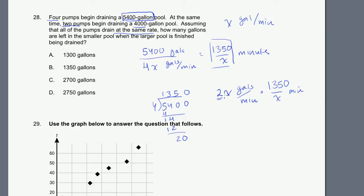The x's cancel out. You have an x in the numerator, an x in the denominator. The minutes cancel out, so our answer will be in gallons. It's 2 times 1,350. We get 2,700 gallons. That's how much has been pumped out of the 4,000 gallon pool. They're asking how many gallons are left in the smaller pool. If we started with 4,000 and subtract 2,700, that's 1,300 gallons left. That is choice A.